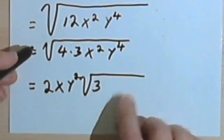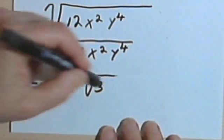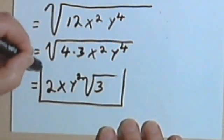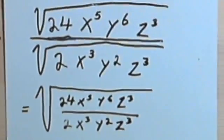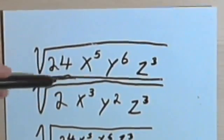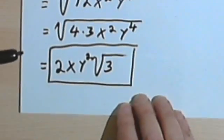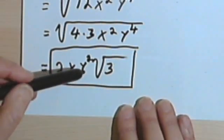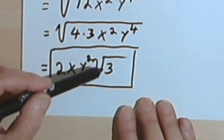And so my solution to what looks like a complicated problem is just 2 x y squared times the square root of 3.